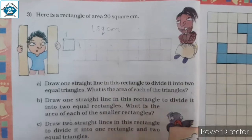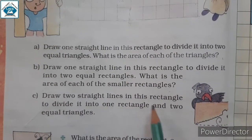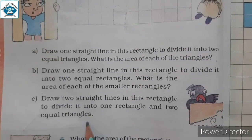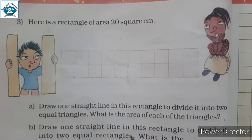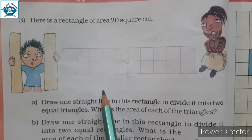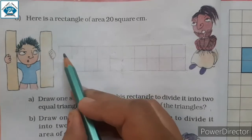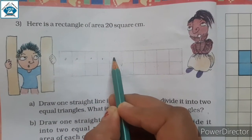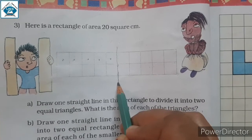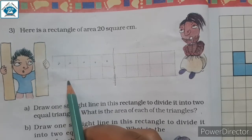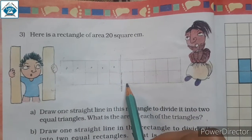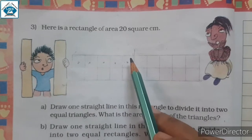It's very easy. Draw two straight lines in this rectangle to divide it into one rectangle and two equal triangles. First, from 1, 2, 3, 4 and 5, you can draw a line here to make two rectangles. This one is the first rectangle and this one is the second rectangle. From here, to make two triangles.